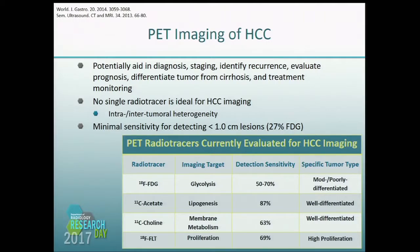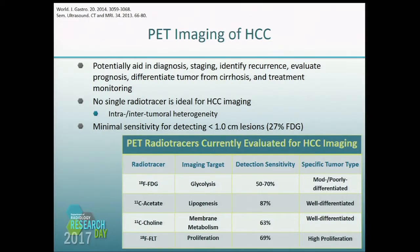Some of the common radiotracers used are FDG, carbon-11 acetate, C11 choline, and FLT. They are all specific for different subtypes of tumors — FDG is good for moderately and poorly differentiated tumors, while acetate is really only good for well-differentiated tumors. Sensitivity for all of them is not ideal; acetate is at 87%, and everything else is 70% or lower.